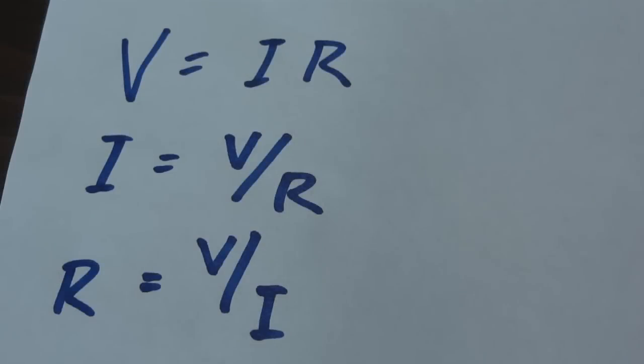In order to calculate the voltage, the current, or the resistance, we can use Ohm's law. All of these three things are related. So basically we can use V equals IR, I equals V over R, or R is V over I. I represents current.